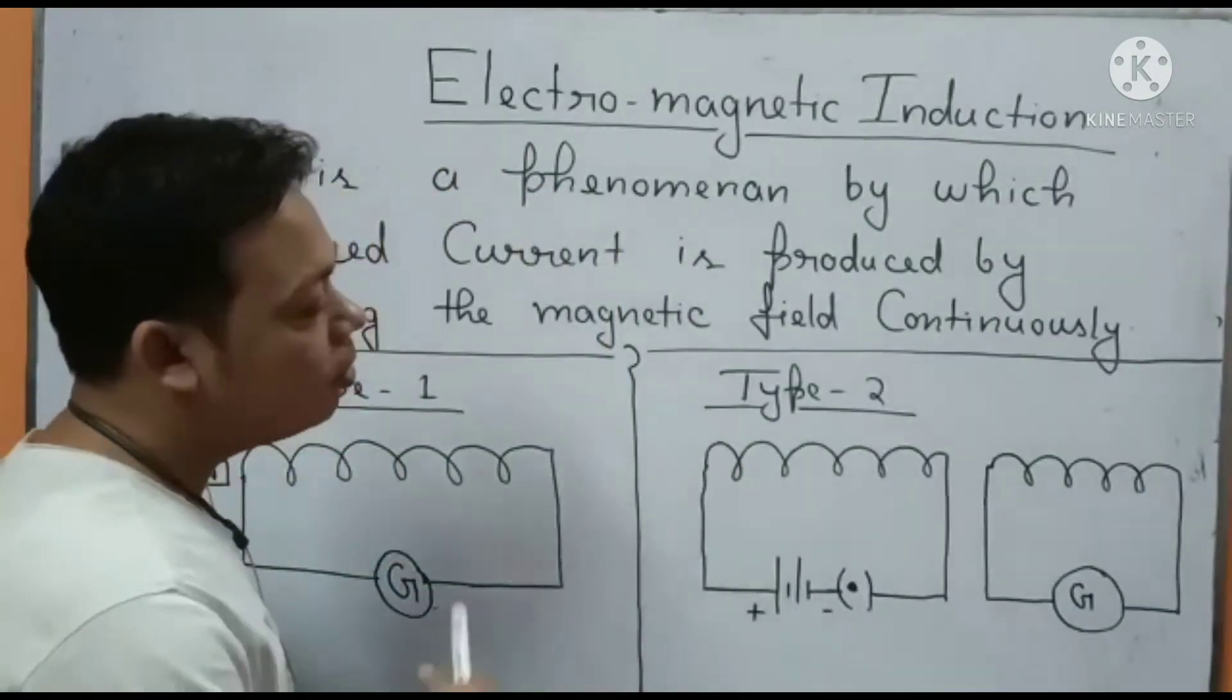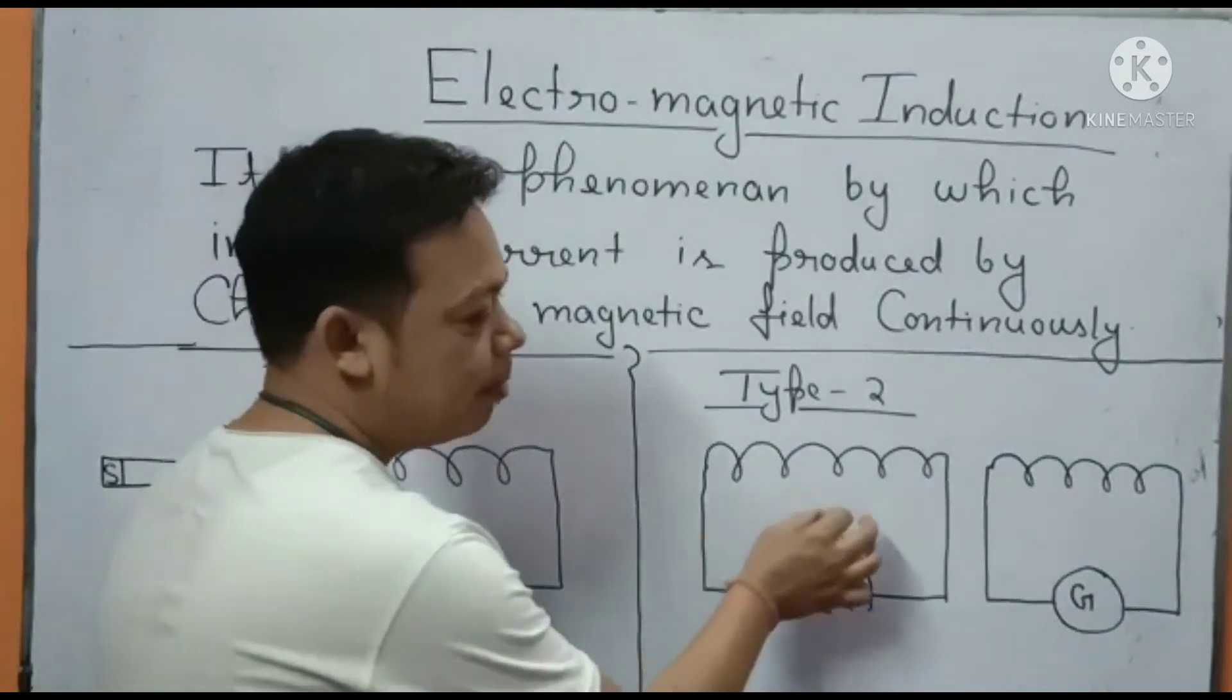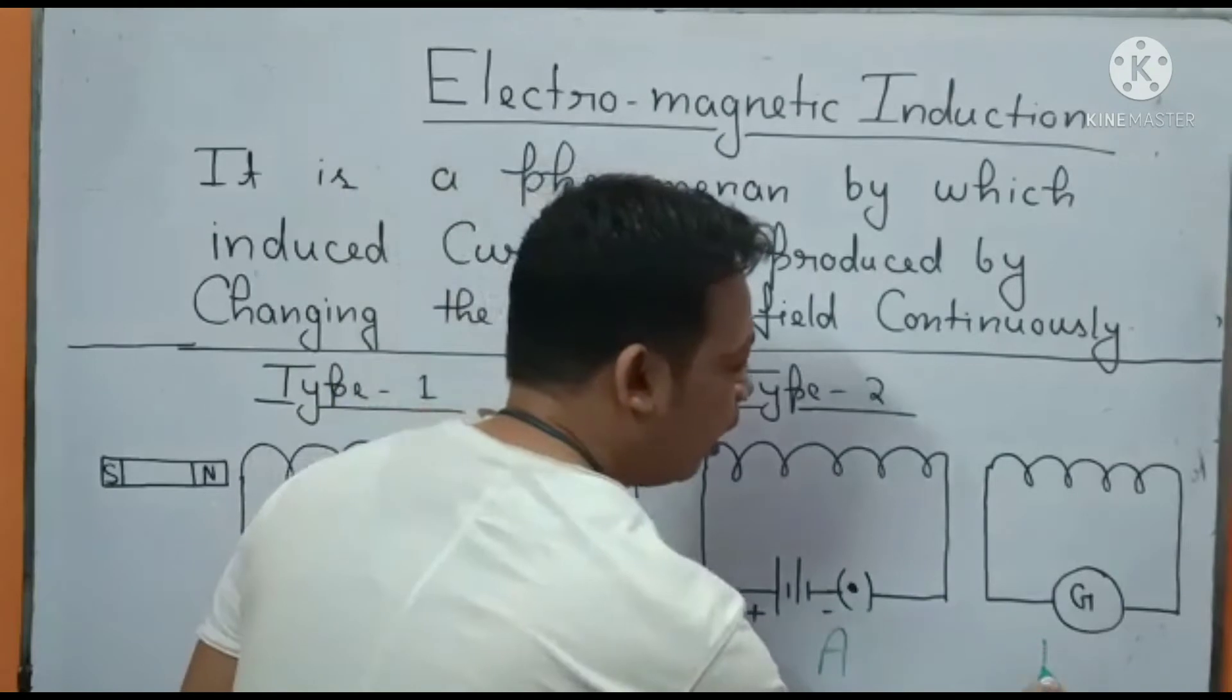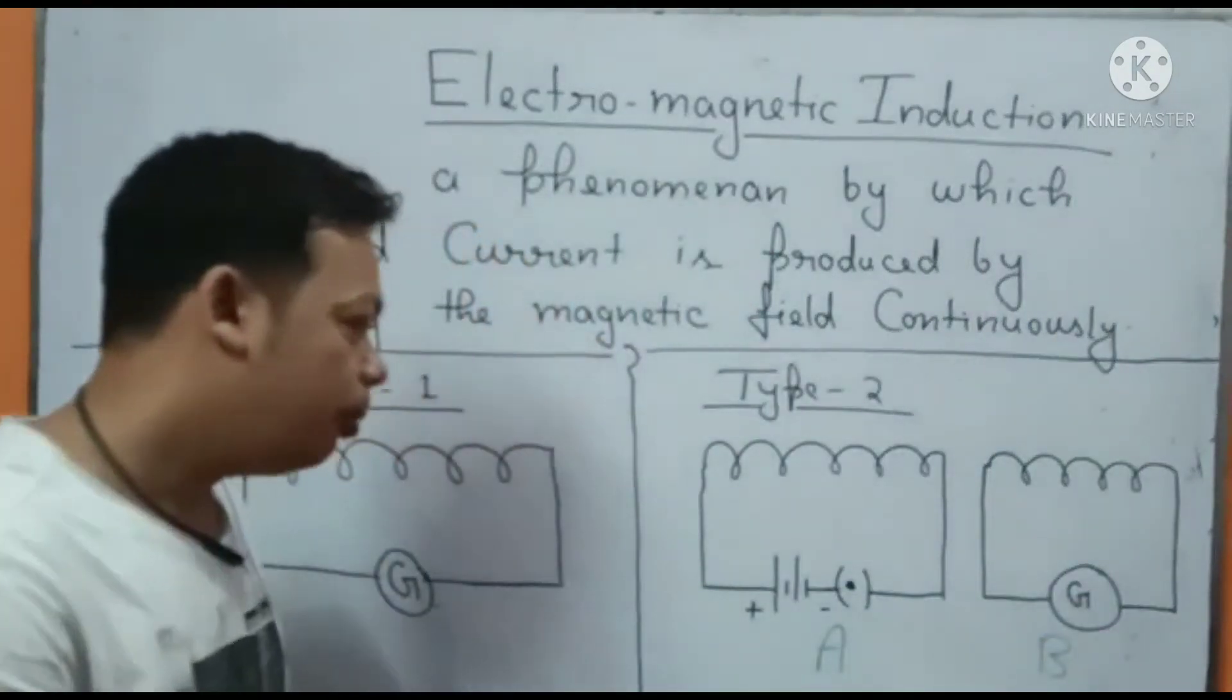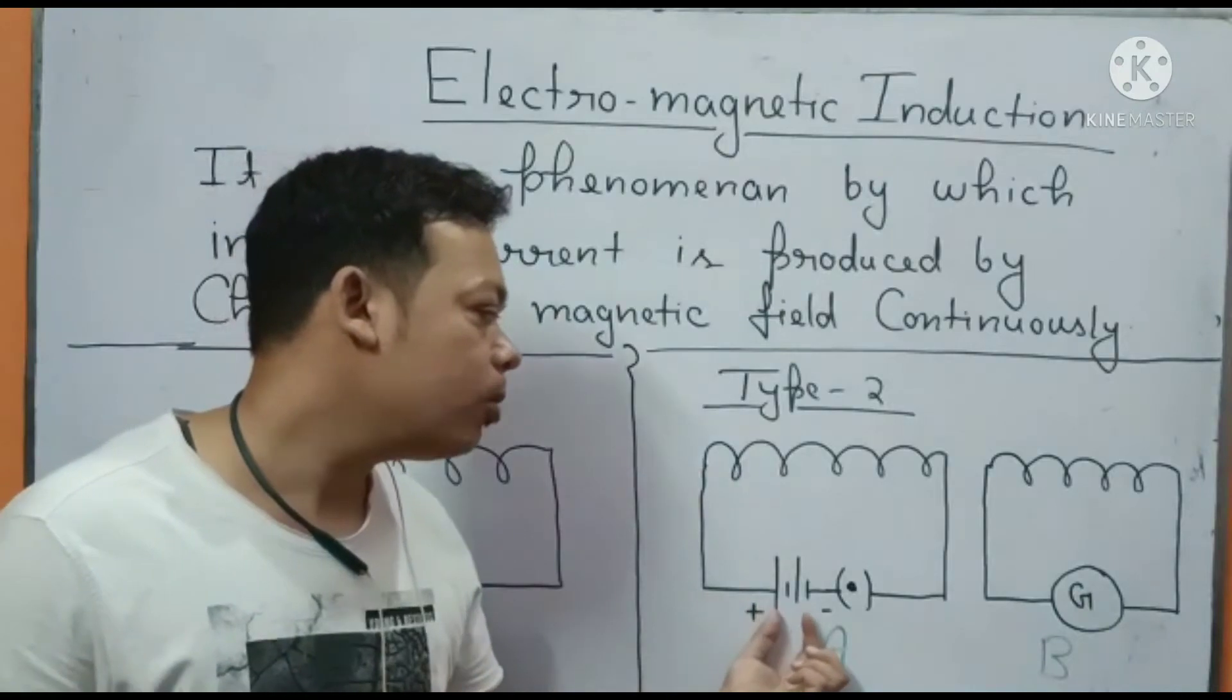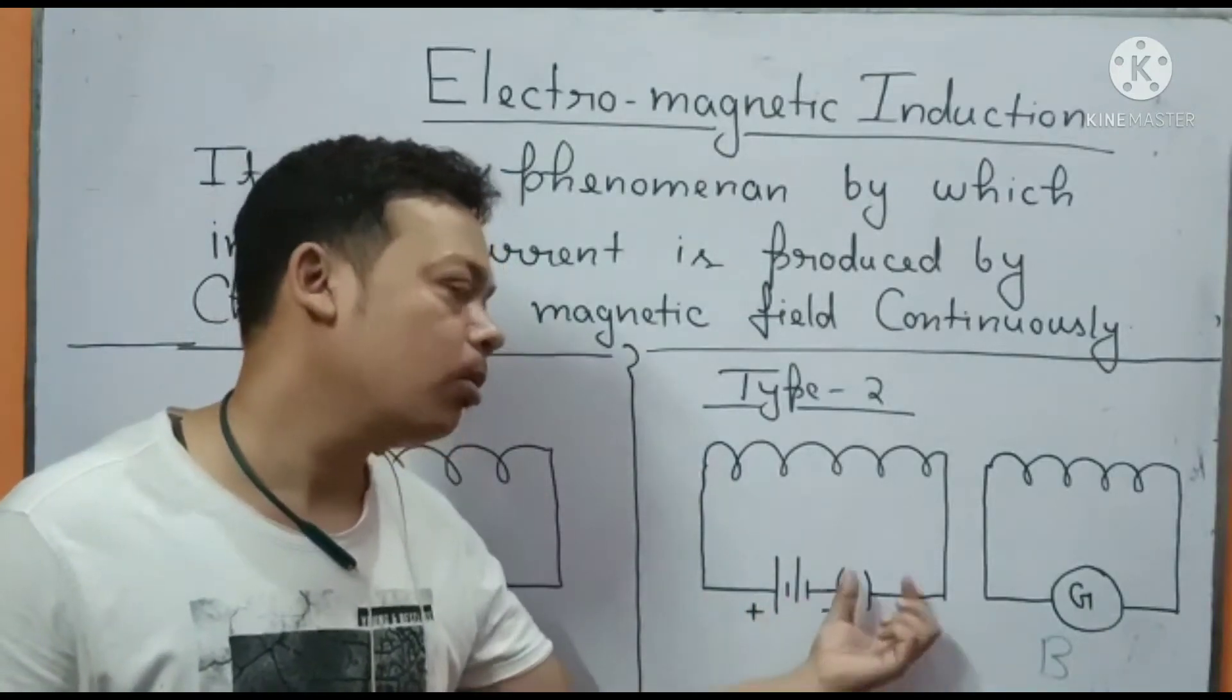Now let us move to Type 2. The second method is that you should have two coils - we are having two coils named A and B. In the first coil, the coil is connected to two terminals of the battery and it includes a switch also.